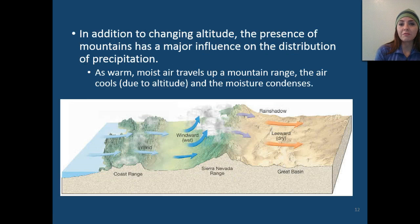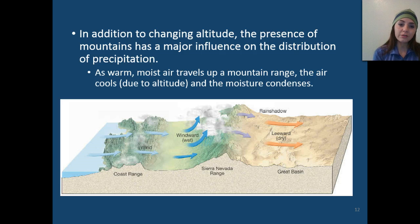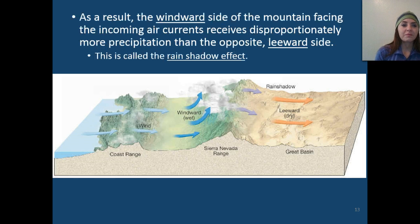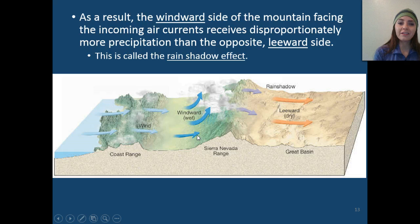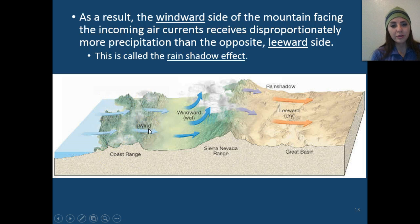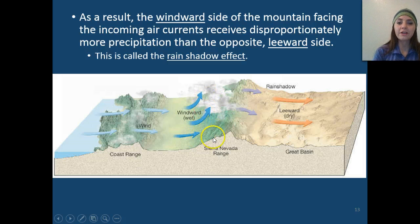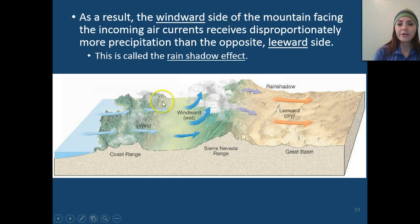In addition to altitude, mountains have a major influence on the distribution of precipitation. As warm, moist air travels up a mountain range, the air cools due to altitude and the moisture condenses. As a result, the windward side — the side facing incoming air currents — receives a disproportionately large amount of precipitation. The other side, called the leeward side, receives much less. This is called the rain shadow effect. You'll see more greenery on the windward side and less vegetation on the leeward side.